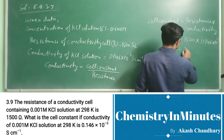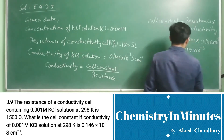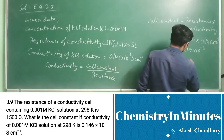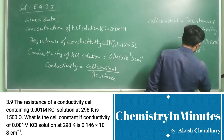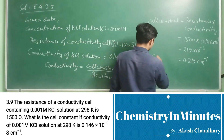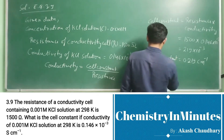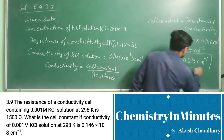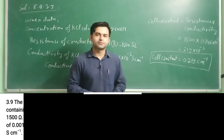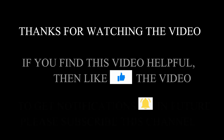This gives 219 × 10⁻³, which can be written as 0.219 per centimeter, or centimeter inverse. So this is the cell constant, and this will be the answer to the question. Thank you.